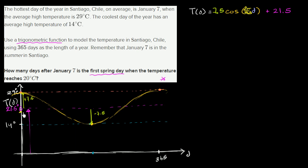And the reason is because there's actually two days where the temperature reaches 20 degrees Celsius. So let's say that this is 20 degrees Celsius right over here. Notice you have this day right over here and then you have this day right over there. And which one is in the spring or the first spring day?